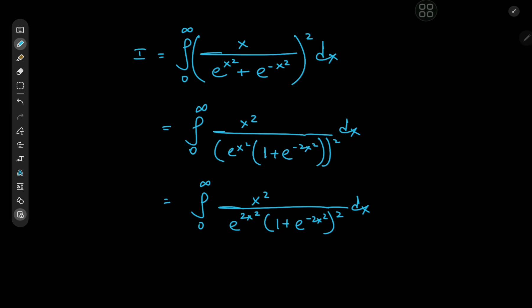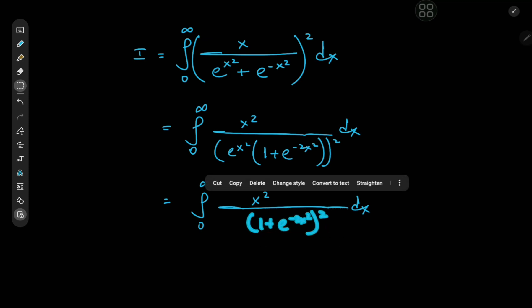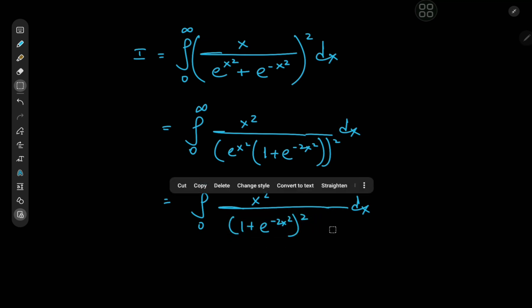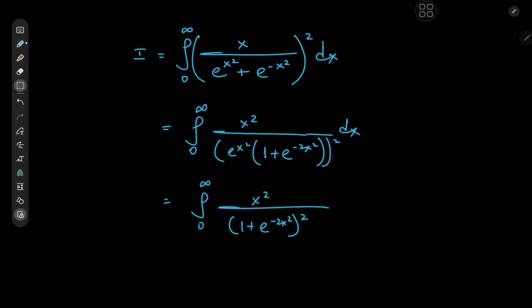And of course we can expand using e to the negative 2x squared, which would cancel out the term in the denominator. And in the numerator we now have e to the negative 2x squared.